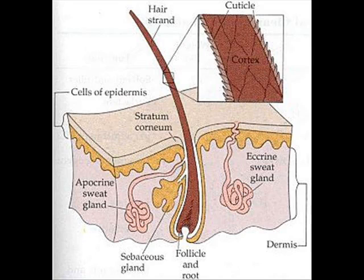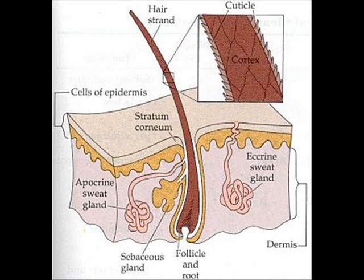If the core body temperature gets too high, hairs lie flat on the surface of the skin, providing little insulation, so more heat can be lost by convection and radiation. When the rabbit's body temperature becomes too low, his hairs are raised to trap a layer of insulating air. This reduces the heat lost from the skin.